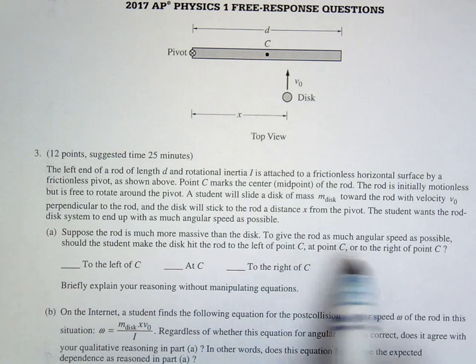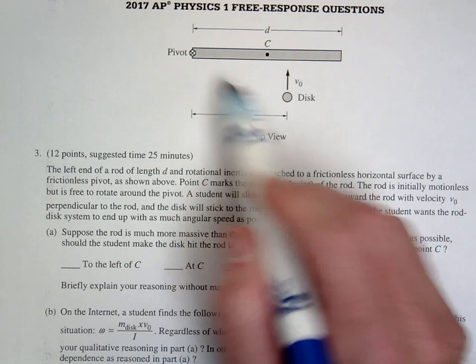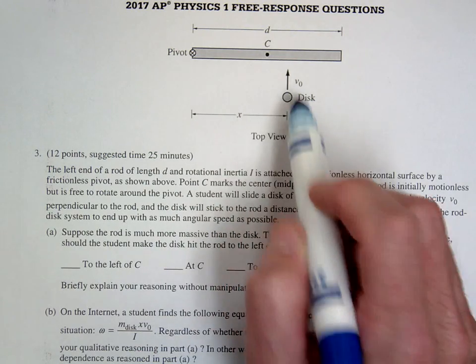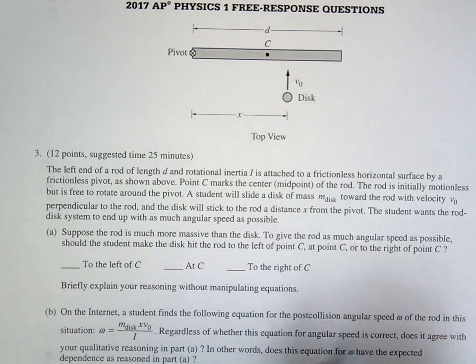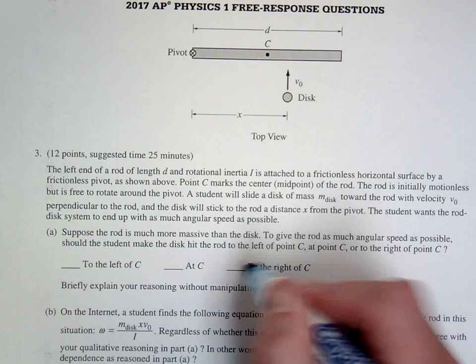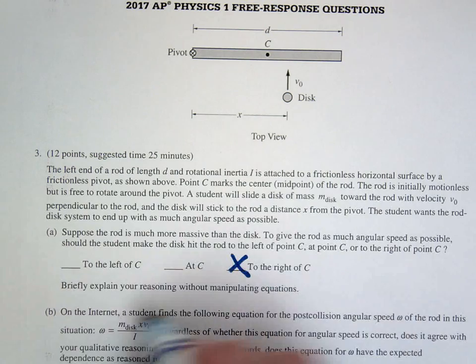And the first question is basically asking where should we launch this? Should we launch it close to the pivot, at the center of mass of the rod, or beyond that? So the answer would be, we're going to go to the right of C here, and they want you to explain.